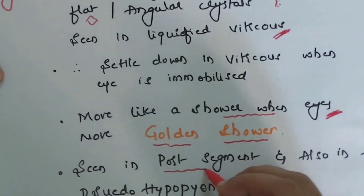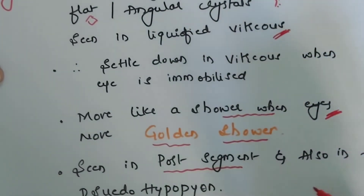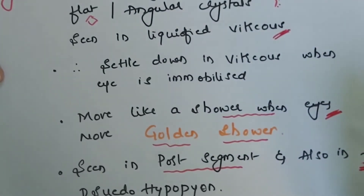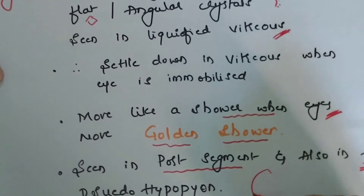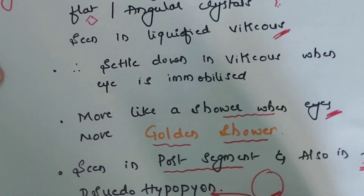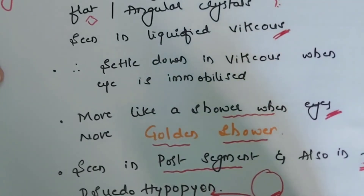Synchisis Scintillans is usually seen in the posterior segment, i.e., the vitreous, but it can also be seen in the anterior chamber. When crystals settle in the anterior chamber, they give the appearance of pseudo-hypopyon. So this is one of the differentials for pseudo-hypopyon.